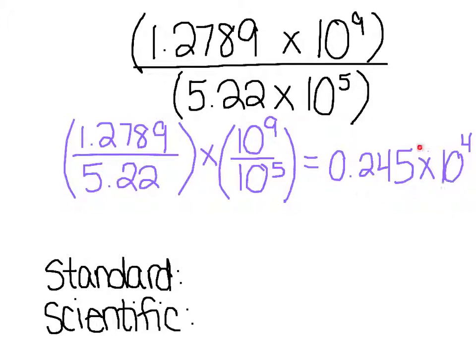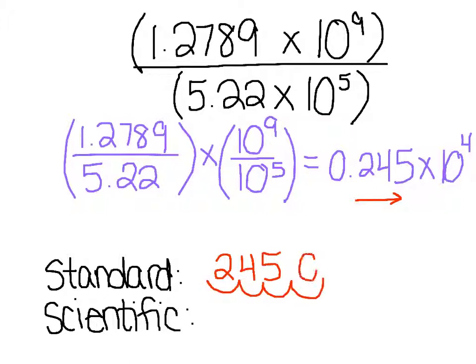Hopefully you said this is not in proper scientific notation. So I'm going to first write my number in standard form. It's a positive exponent, so I'm going to move my decimal to the right. I have 2, 4, 5 and my decimal was here; I'm moving it 1, 2, 3, 4 spots, adding a zero. And my answer is 2,450.